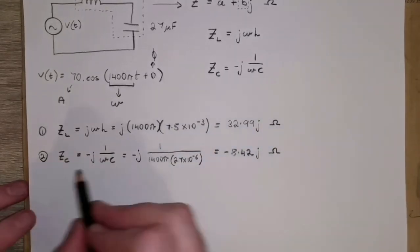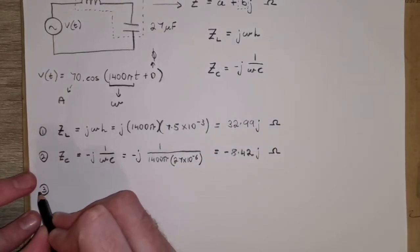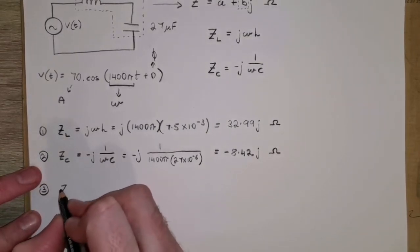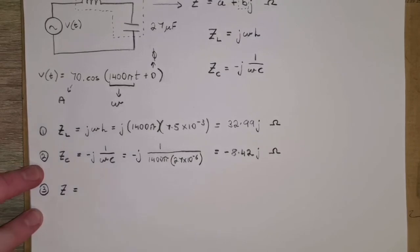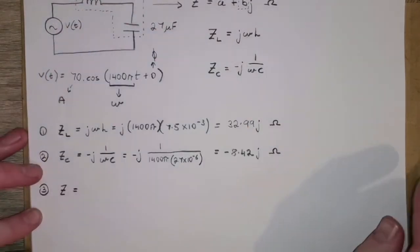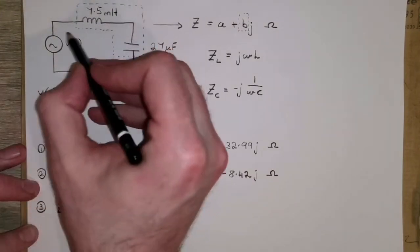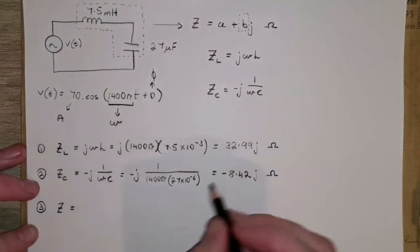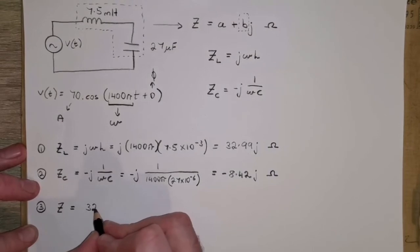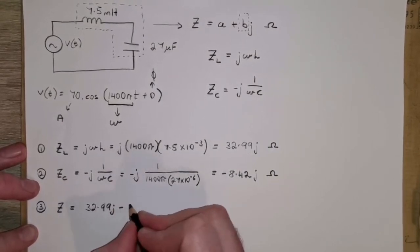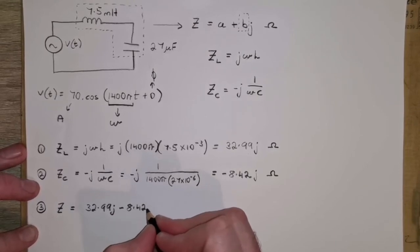Now we can get the total impedance. So our total impedance Z, we add up all of the impedances because we're in series. Now we don't have any resistors, so there's no real elements to this. We just add these up here, so we've got 32.99j minus 8.42j.